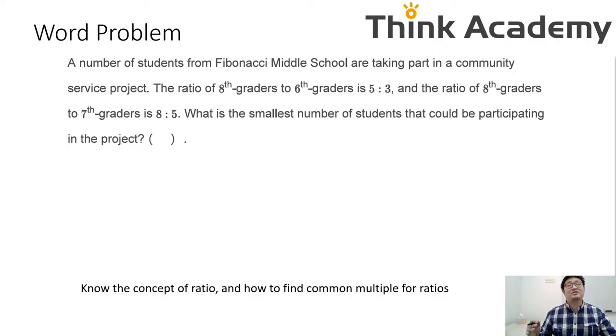This is an example that's not necessarily hard, but has some traps. It's a word problem. A number of students from Fibonacci Middle School are taking part in a community service project. The ratio of 8th graders to 6th graders is 5 to 3, and the ratio of 8th graders to 7th graders is 8 to 5. What is the smallest number of students that could be participating? The math is not hard, but you need to understand the concept of ratio and be able to read the question and get what they're actually asking.